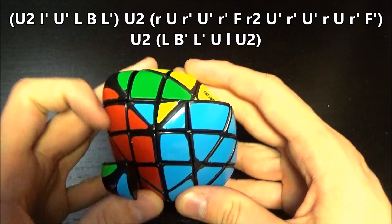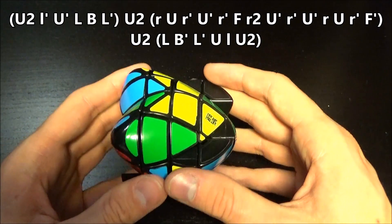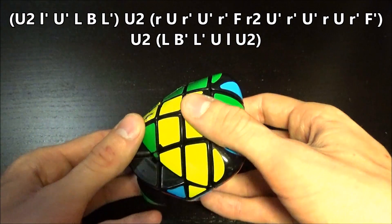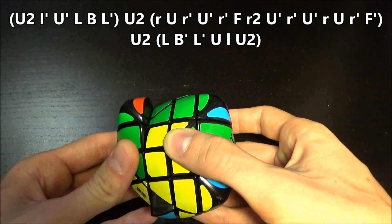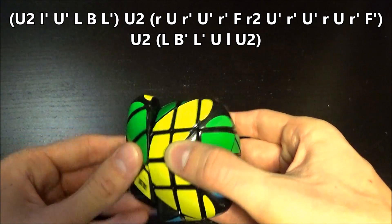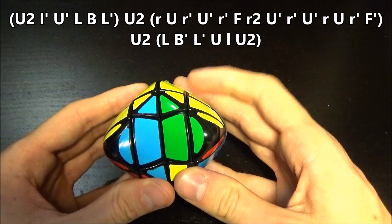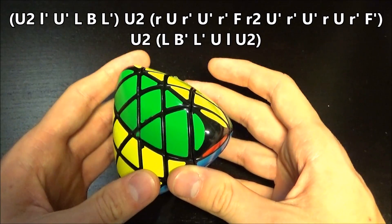Front Inverted. And now the opposite we did before: Up 2, Left, Back Inverted, Left Inverted, Up, Left Inverted, Up, Left, Up 2.